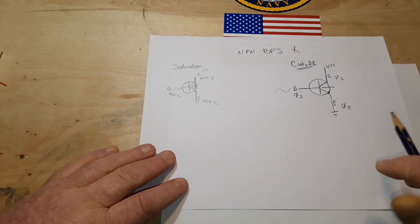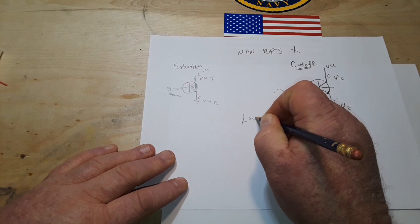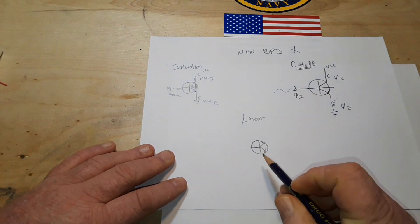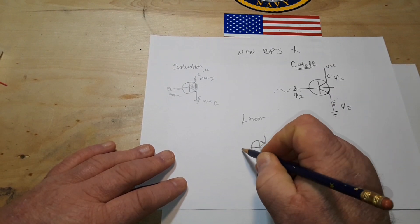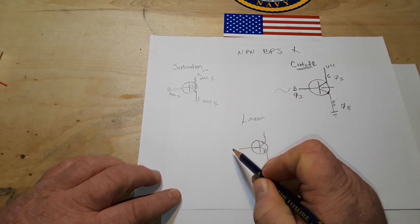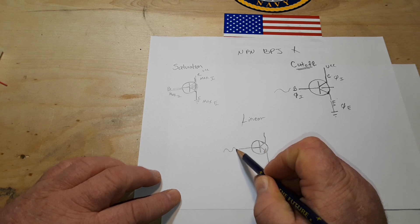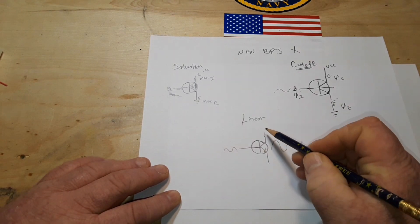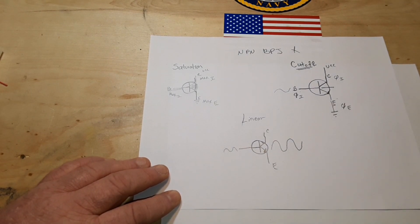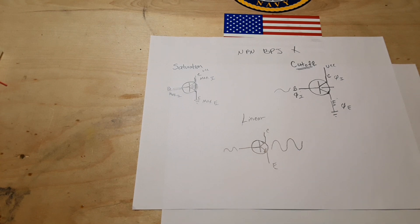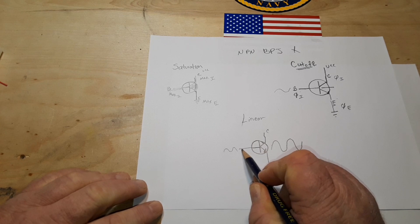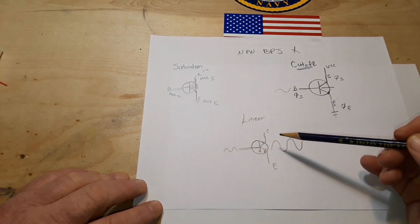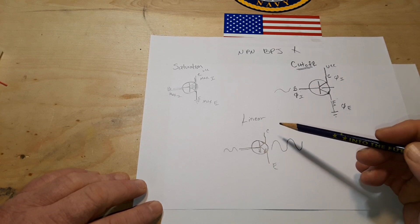Now we have the third region which is called the linear region. In this case we have a small varying current at the base which creates a larger varying current through the collector to emitter junction. That's how it works as an amplifier. The current that comes in here is amplified a number of times and you can find that in the data sheet for whatever transistor you're looking at.